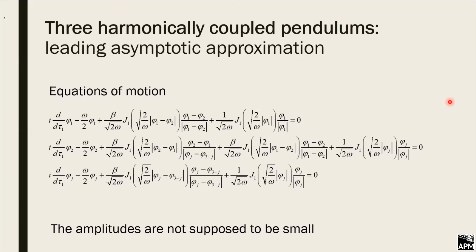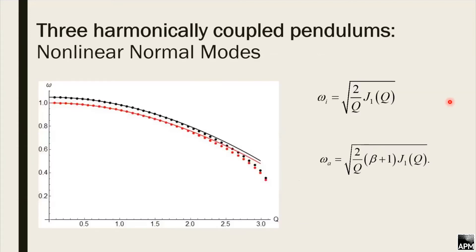We have found the in-phase and anti-phase nonlinear normal modes of the three-pendulum system. The third mode, which would appear in the quasi-linear case, does not survive for the highly nonlinear case, and we will not consider it. We find almost equal frequency values for the in-phase and anti-phase normal modes, and here you see the comparison between analytical and numerical results, analogous to the two-pendulum system. We also see the stability and instability regions of the nonlinear normal modes: the gray region defines the instability of the anti-phase mode, and the red region defines the instability of the in-phase mode.